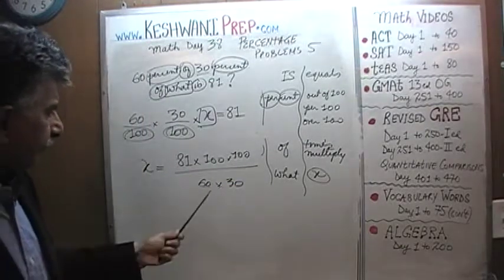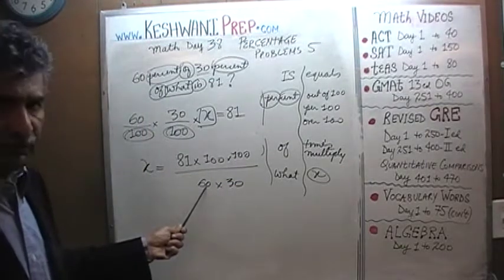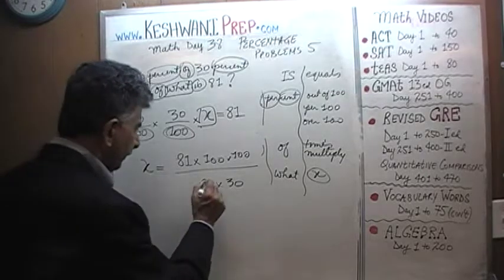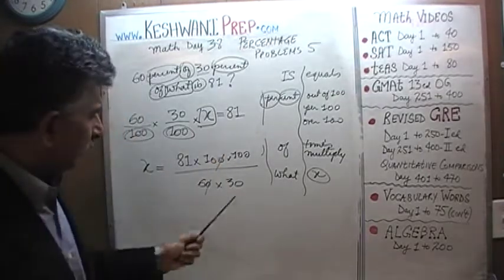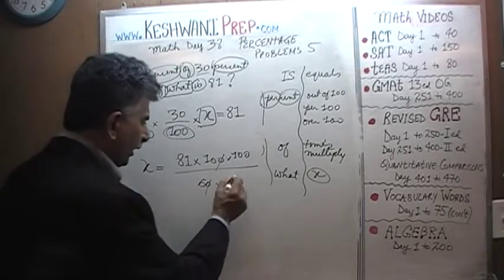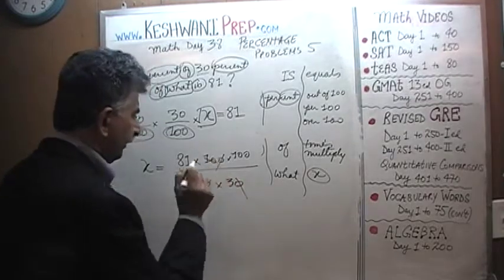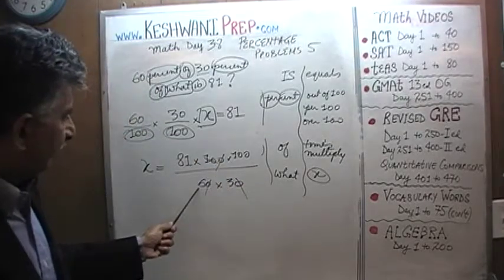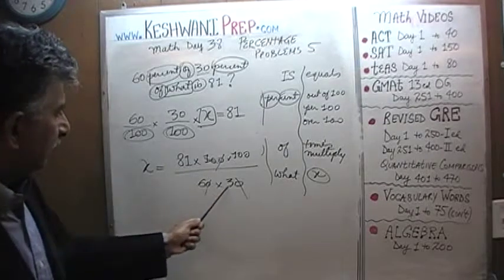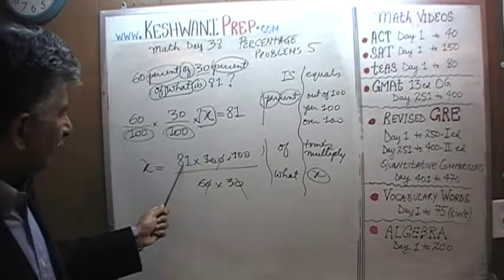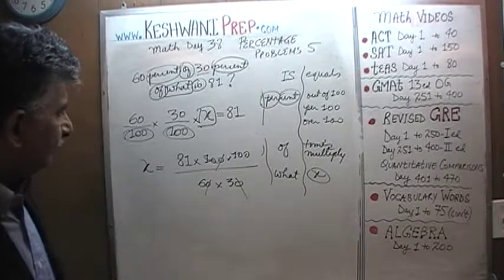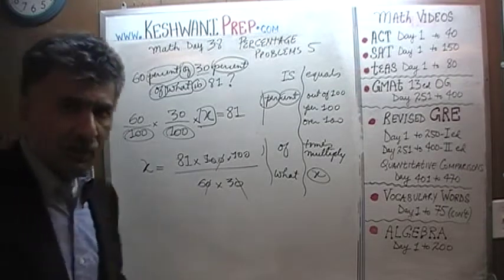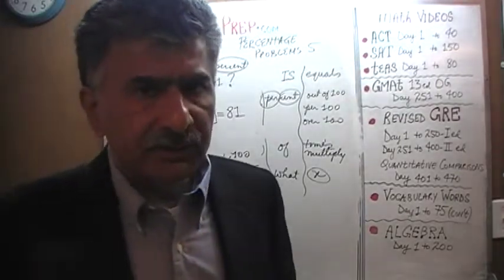We can simplify. We see 60 here and 100 here — divide top and bottom by 10, knocking out a zero. Divide by 10 one more time, knocking out another zero. Now I see 6 here and 81 here. Is 81 divisible by 3?